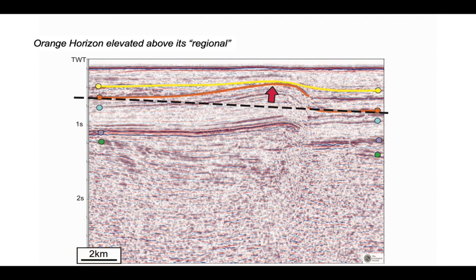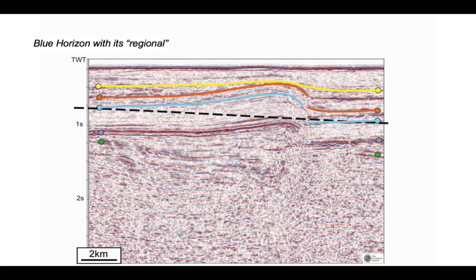Okay, now let's do the same thing for the next horizon down. So here's the continuity of the blue horizon again, which appears broken, presumably by a fault. So let's again construct the regional for the blue horizon. There we go. And we can see in the vicinity, particularly on the left hand side, the blue horizon has been elevated again above its regional.